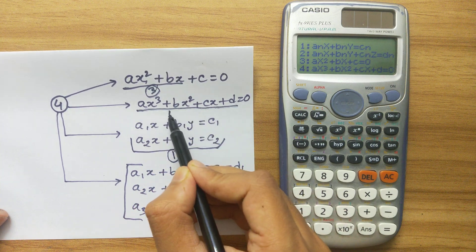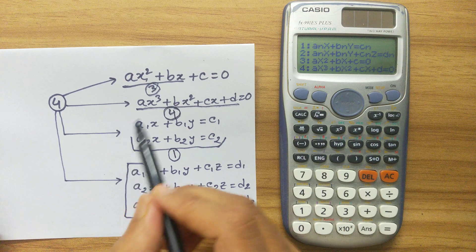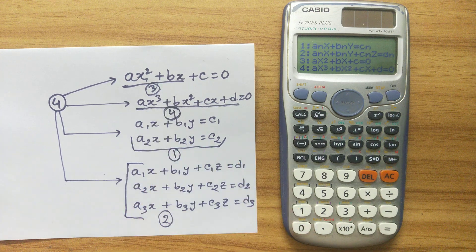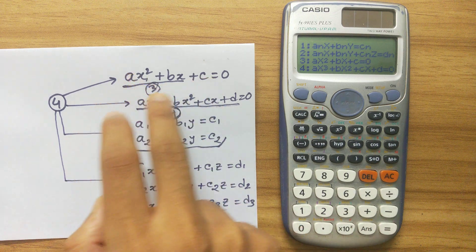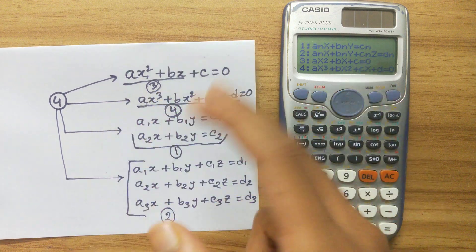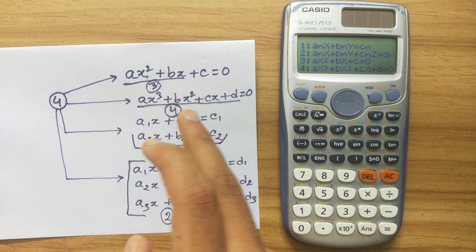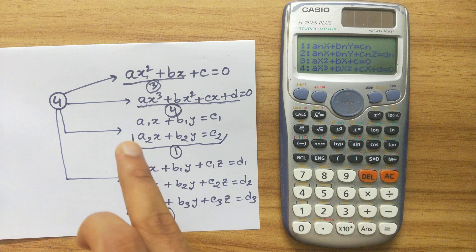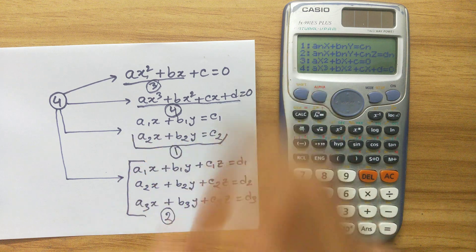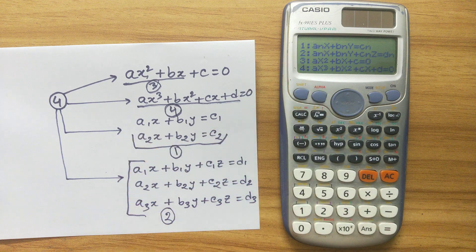So to summarize: for the quadratic equation type press 3, for the cubic equation type press 4, for two equations with two variables press 1, and for three equations with three variables press 2. Now I will show you examples so you can be 100% clear on how to solve each type.